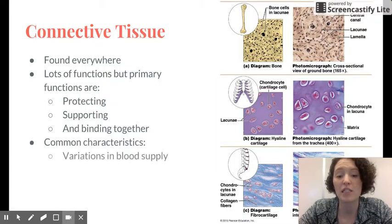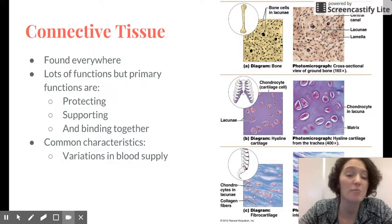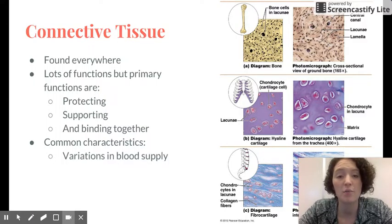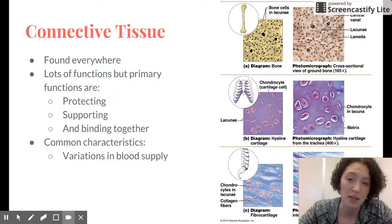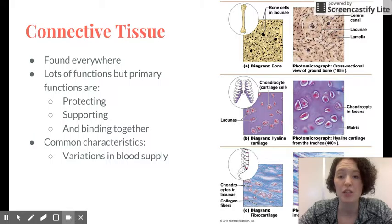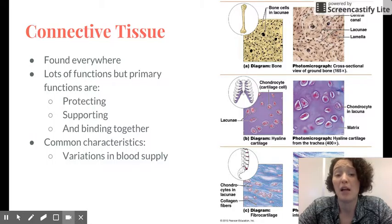Common characteristics for connective tissue: they have variations in blood supply. So unlike epithelium where they were all avascular, here some might be avascular, some might be well vascularized. So some might get lots of blood, others like ligaments and tendons and cartilage, they might get no blood supply at all.